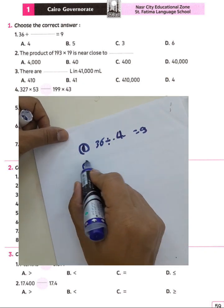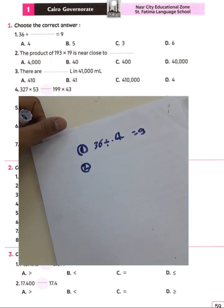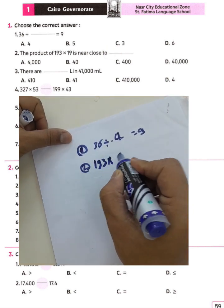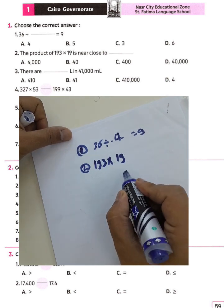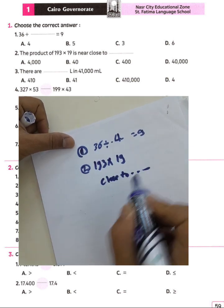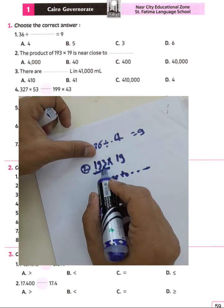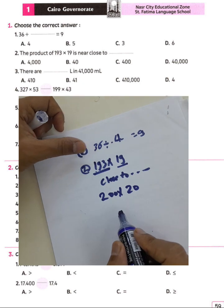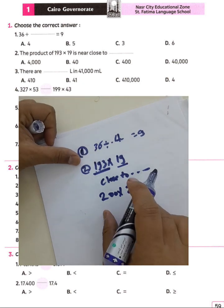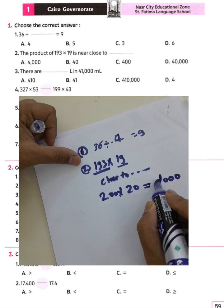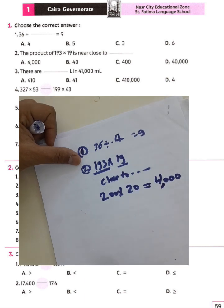Question number two: the product of 193 times 19 is close to what? We know 193 is nearest to 200 and 19 rounds to 20, then the multiplication between the two numbers — we write three zeros and 2 times 2 equals 4 — the result will be four thousand.